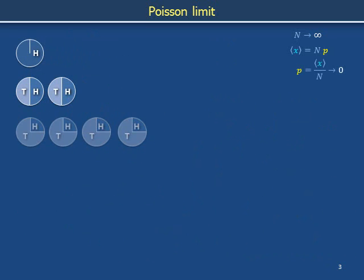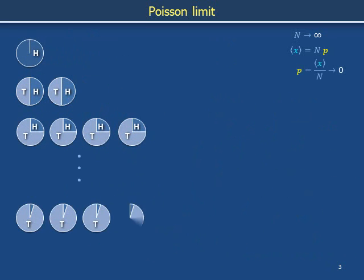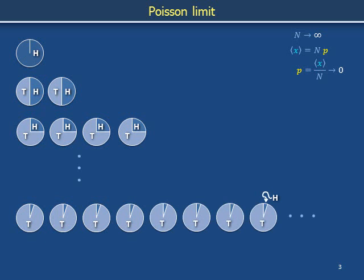This limiting process is sometimes referred to as the law of rare events. This does not mean that the total number of heads decreases — in fact, the total number of heads expected remains the same for each row of pie charts. However, the slices of individual pies corresponding to the outcome heads shrink to a tiny sliver as the number of pies per row increases. The likelihood of obtaining heads on any individual toss decreases as we move down the page, and this is the sense in which the Poisson limit is regarded as the limit of rare events. The average total number of heads is the product of the number of coin tosses N multiplied against the probability p.